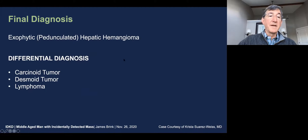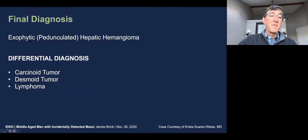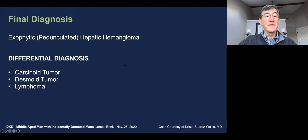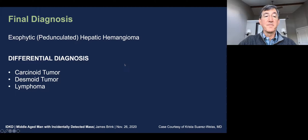My diagnosis then is that of a hepatic hemangioma with an exophytic or pedunculated nature. Differential diagnosis includes carcinoid tumor, desmoid tumor, and lymphoma.